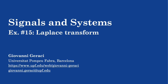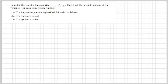Let's get started with today's exercises. Exercise number four gives us a transfer function H(s) which is one over (s minus one) times (s plus three). We should sketch all the possible regions of convergence, and for each case reason whether the impulse response is right-sided, left-sided, or bilateral, and whether the system is causal and stable.